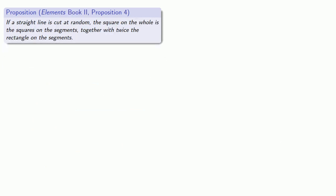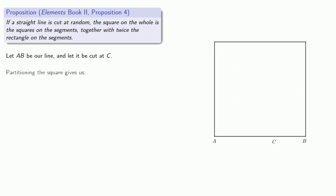A couple propositions later, Euclid proves an important one. If a straight line is cut at random, the square on the whole is the squares on the segments together with twice the rectangle on the segments. So let AB be our line and let it be cut at C, some place at random. So we have the square on the whole.